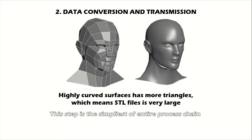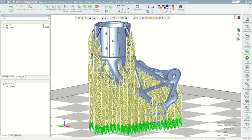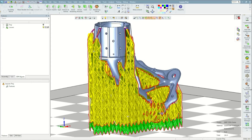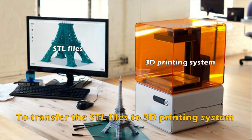This conversion step is probably the simplest and shortest of the entire process chain. However, for a highly complex model coupled with an extremely low-performance workstation, the conversion can take several hours; otherwise it should take only several minutes. Necessary supports are also converted to a separate STL file. Supports can alternatively be created or modified in the next step by third-party software, which allows verification and modification of models and supports. The transmission step transfers the STL files to the 3D printing system via disk, email, LAN connection, or a pen drive.